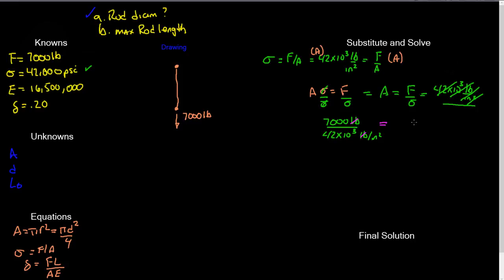So then that becomes, let me get my calculator out, 7,000 divided by 42. And that 10 to the third cancels out those three zeros, so it ends up with 7 divided by 42. So that should be 0.1667 inches squared.